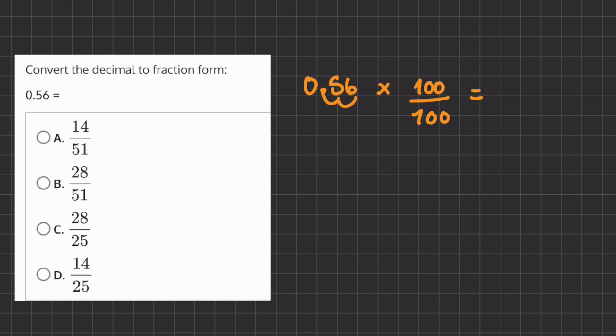So 0.56 multiplied by 100 is 56, and we'll keep our denominator. So now we have our fraction, but we still have to simplify it.